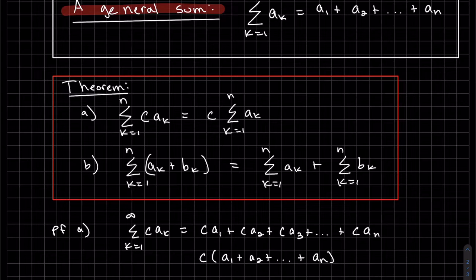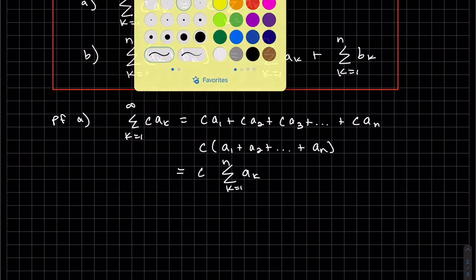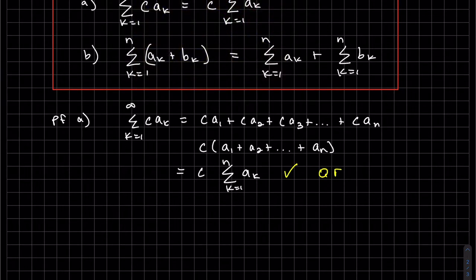And you can see this is our general sum. So we can rewrite it using the notation. And that is QED. We have shown that this is equal to that. That's part a.